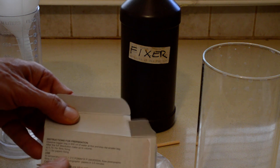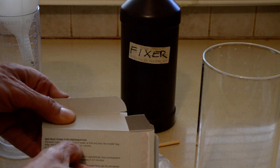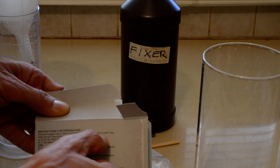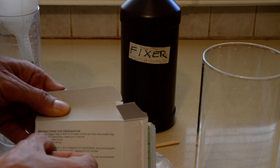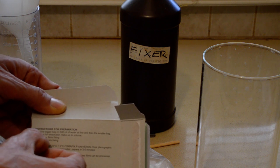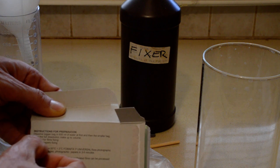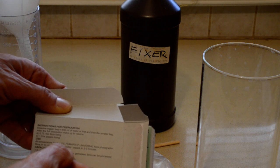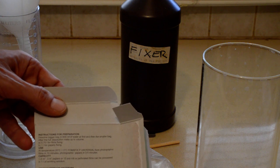So the instructions, at least the ones in English, say: dissolve bigger bag in 600 milliliters of water at first, and then the smaller bag. After the full dissolution, make up to volume. A: 0.75 liters for film. B: 1 liter for paper. And that's it. Those are all the instructions you get.